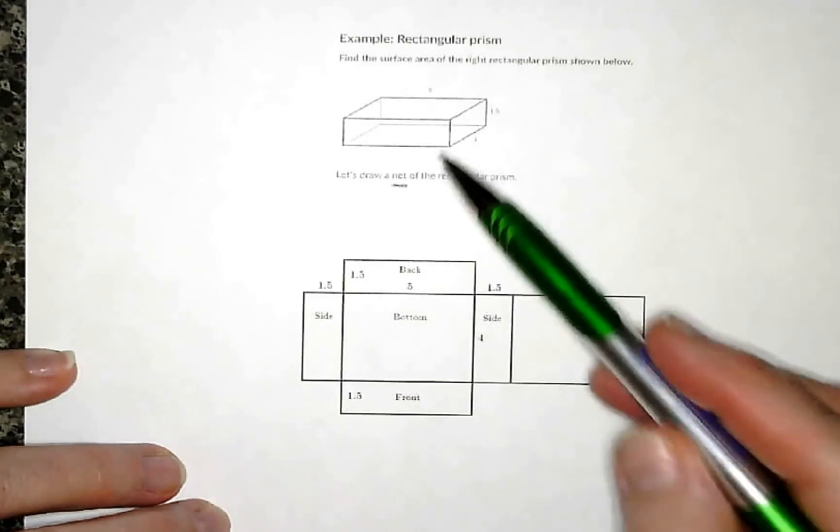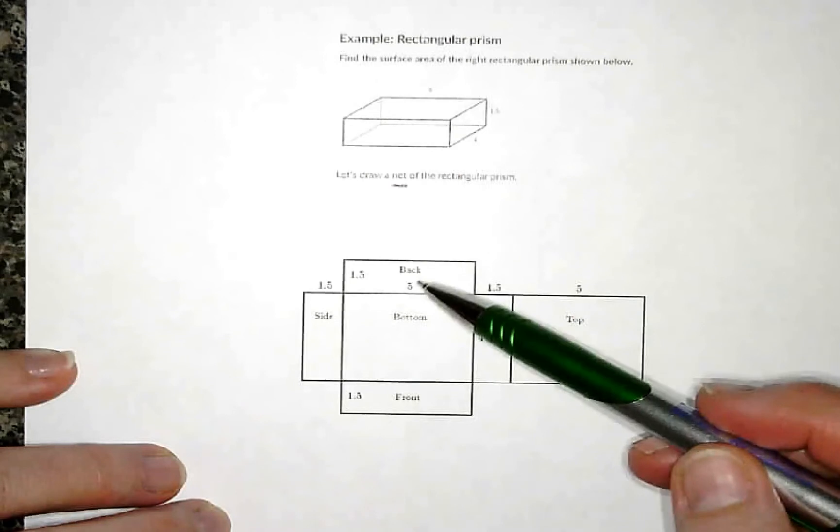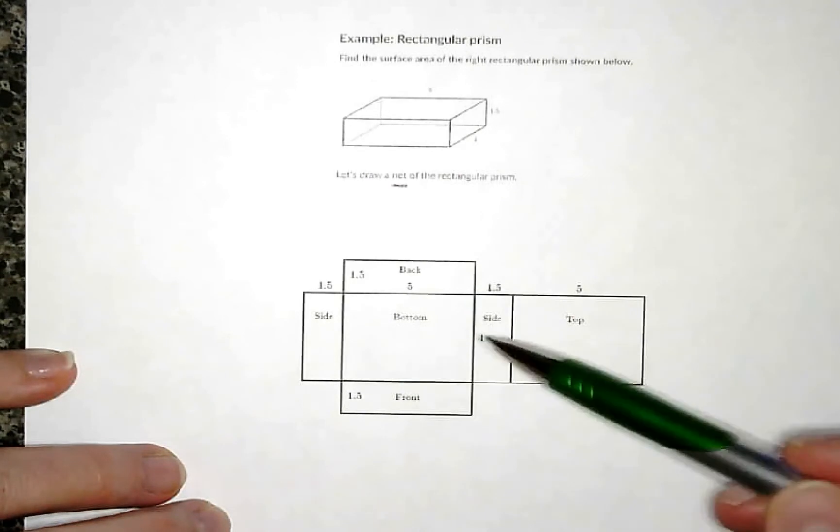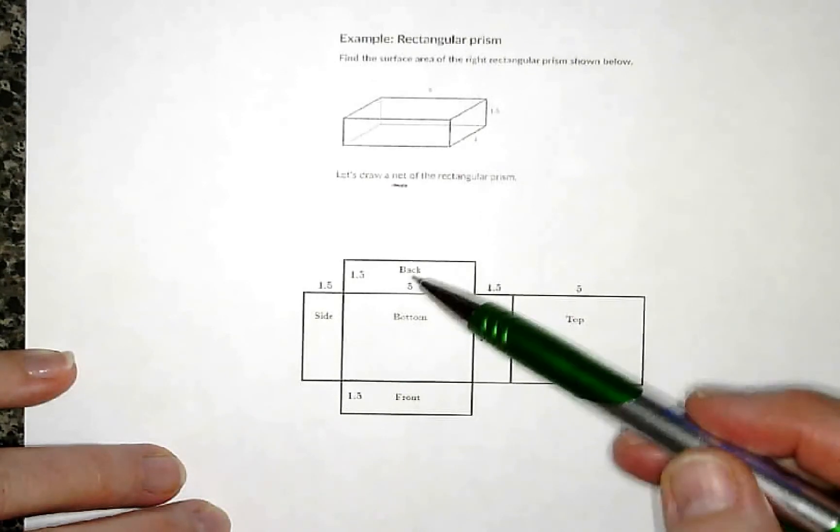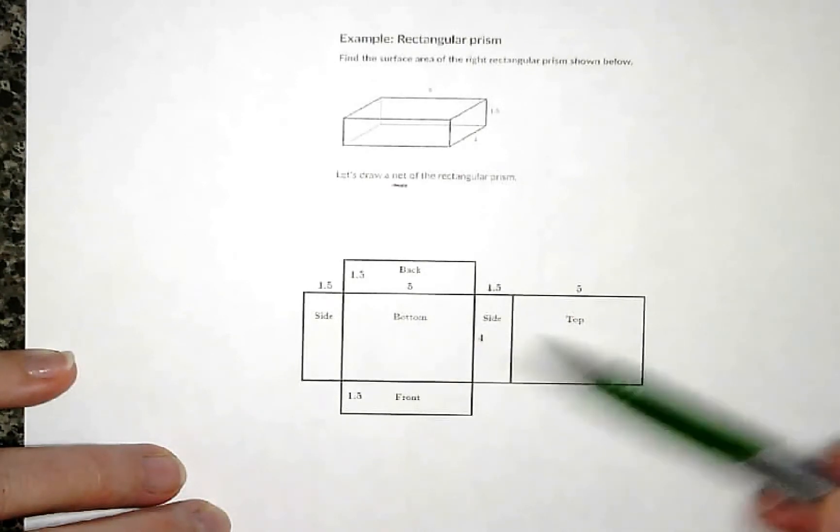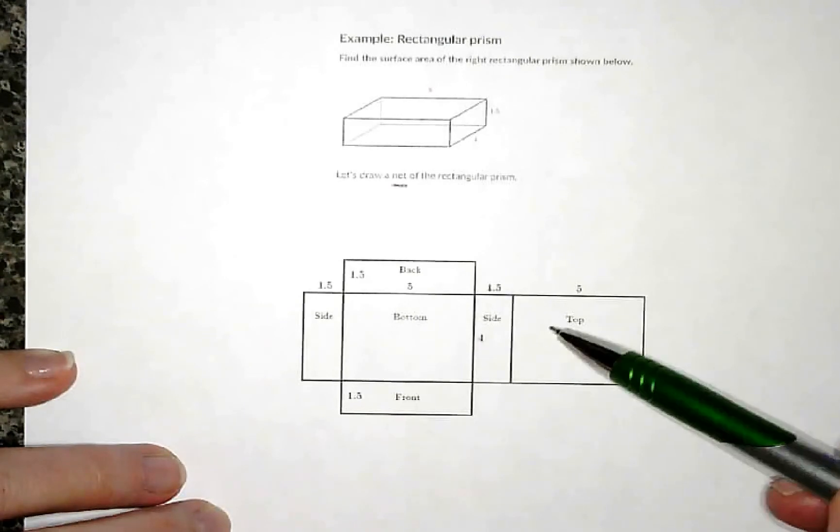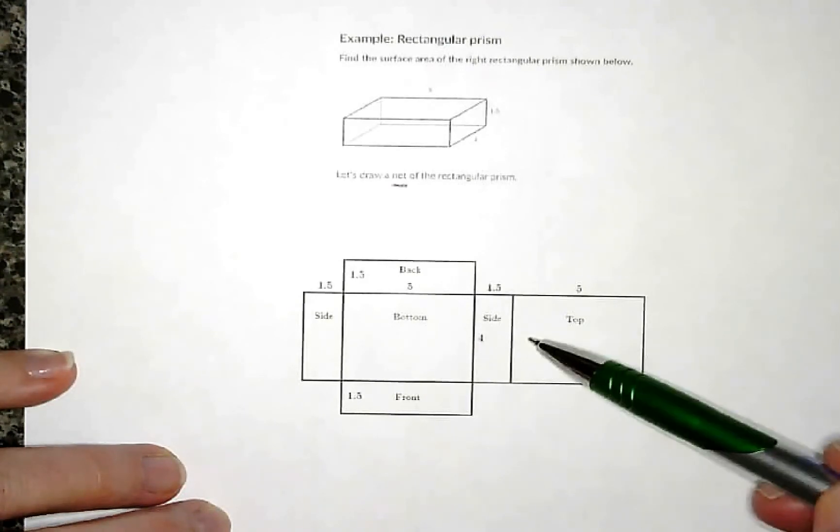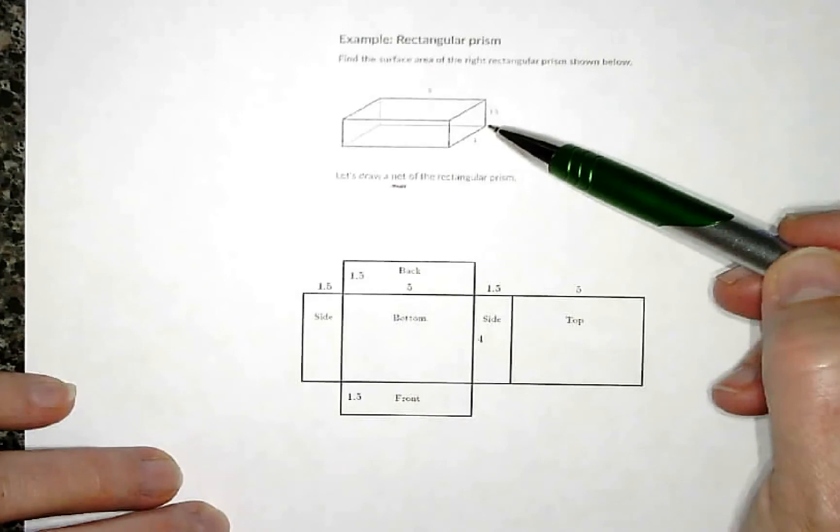So a net of this shape would show all six rectangles that I could find the area of all six of those, add them all together, and that would give me the total surface area of this box.